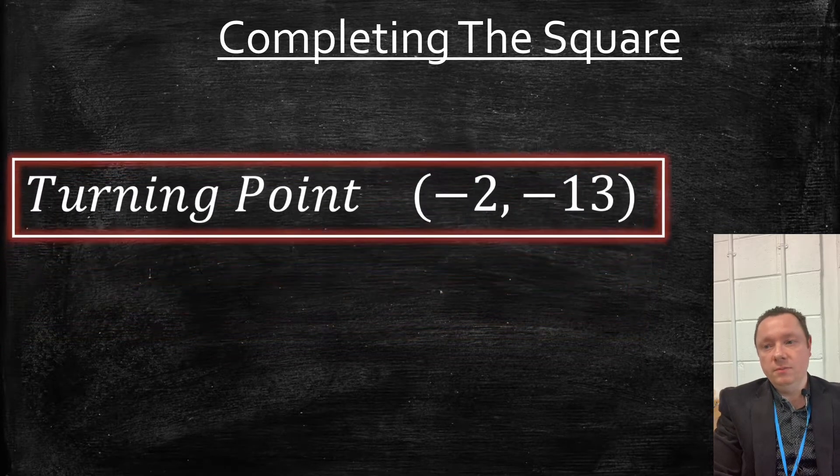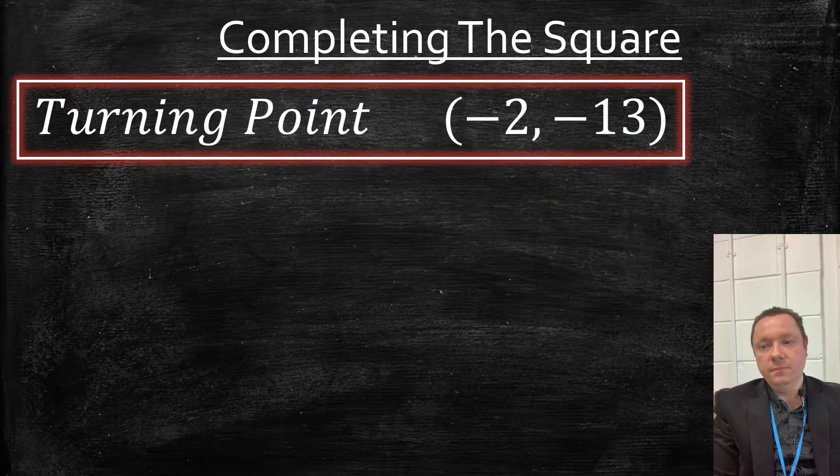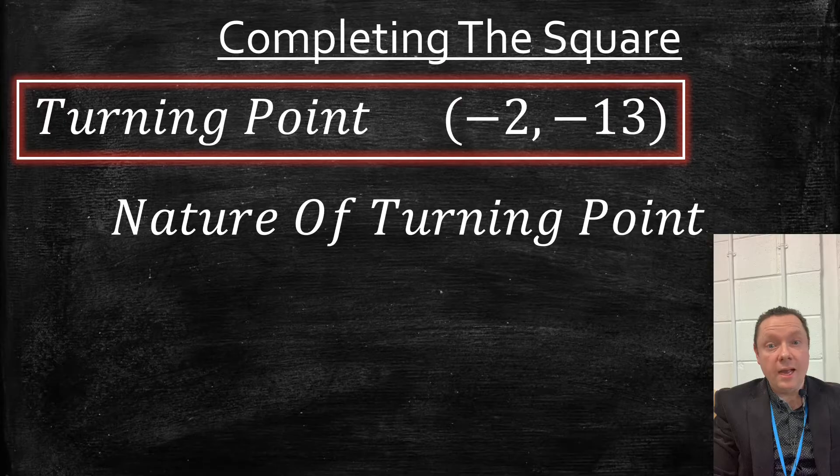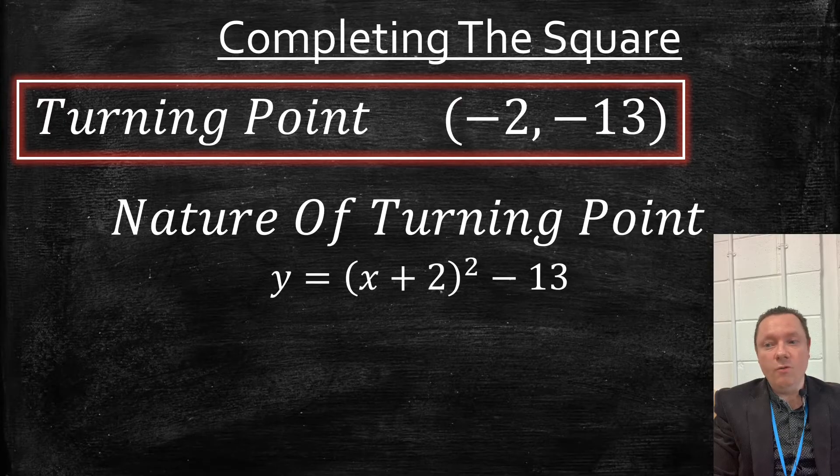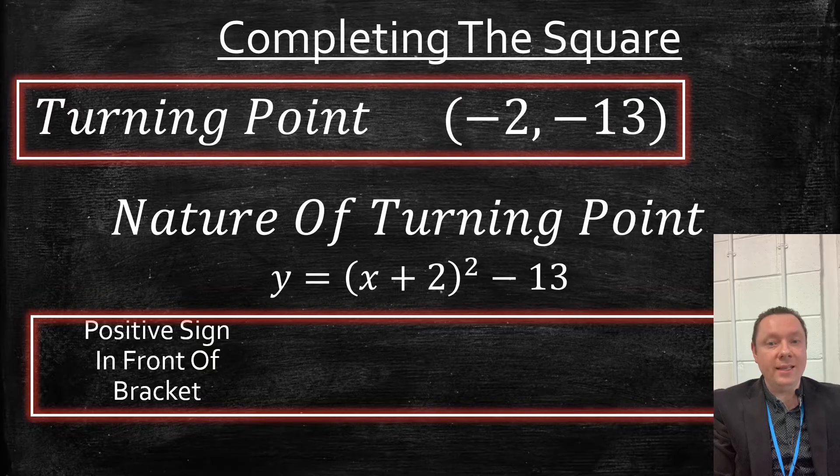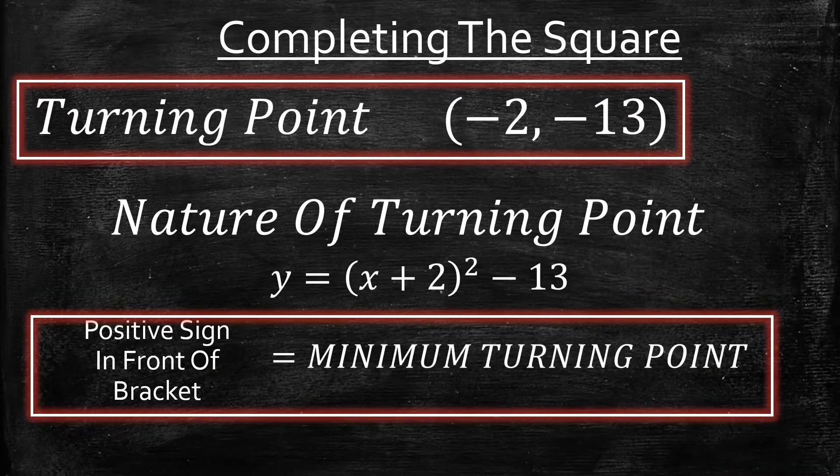The nature of the turning point is defined or given by the sign in front of the bracket. It's a positive sign in front of the bracket, and that tells you that it is a minimum turning point.